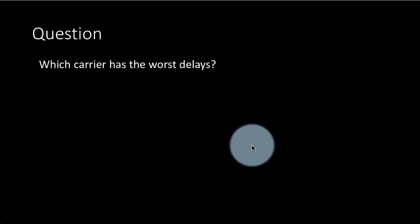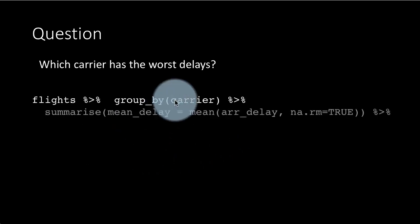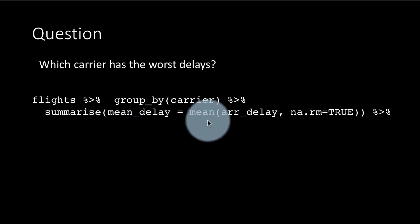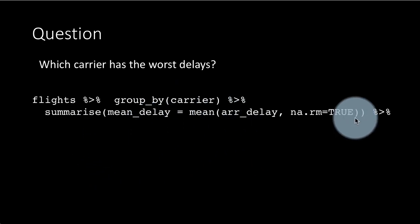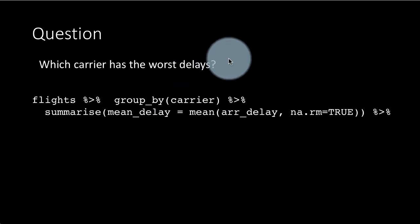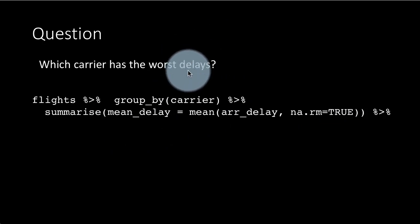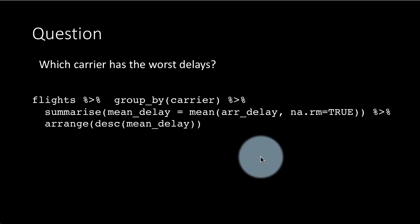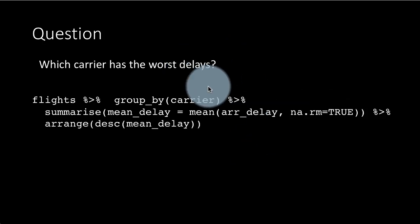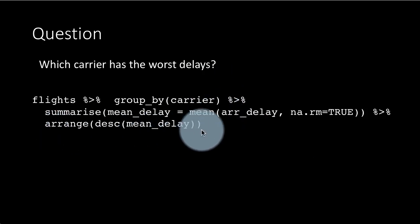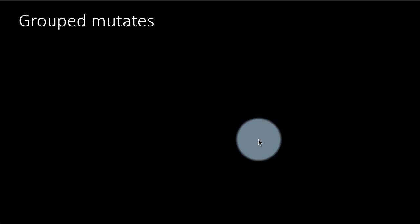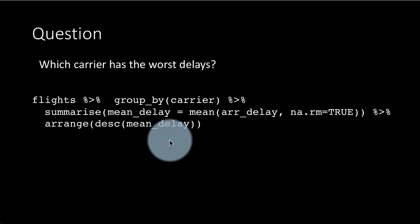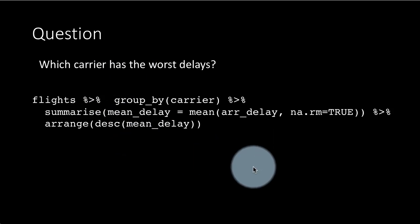Which carrier has the worst delays? So again, now we are going to group by carrier and calculate the average delay. Mean_delay is mean arrival_delay, and na.rm equals true. Of course, when they say delay, we have to interpret it carefully. What do we mean? Arrival delay, departure delay? We chose arrival delay in this particular case. And we want to see the worst delays, so we are doing an arrange by descending order of mean_delay. And we'll take the first row. So you can answer all these sorts of questions quite easily.